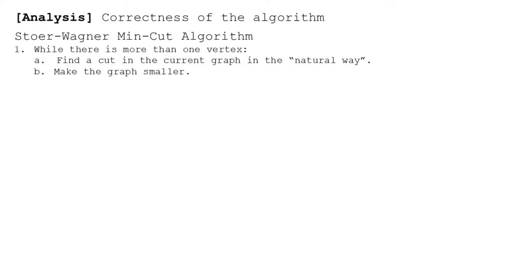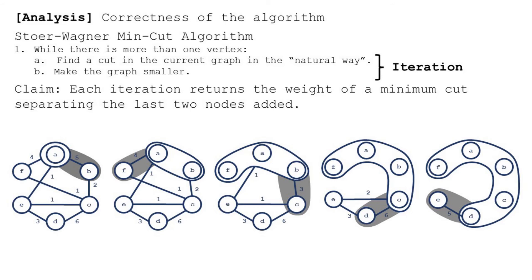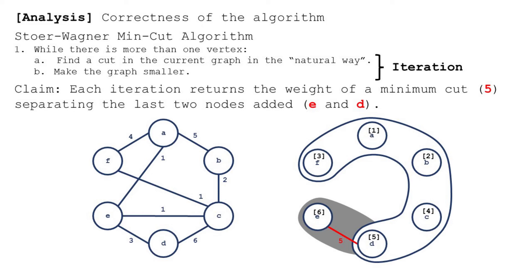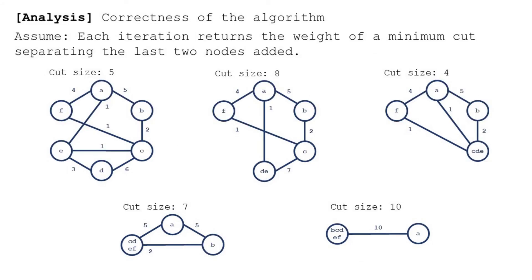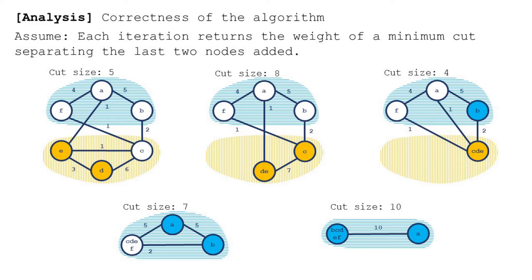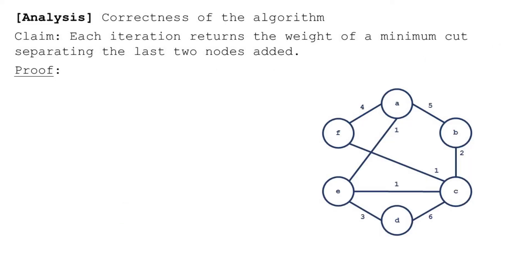After all this discussion of the algorithm, let's make sure it's correct. It follows from this claim: each iteration returns the weight of a minimum cut separating the last two nodes added. Recall that each iteration consists of finding the cut in the natural way and then merging the last two vertices added. For the first iteration, the claim is that any cut separating E and D must have weight at least five. If the claim is true, then the minimum cut size returned by any iteration occurs exactly when one vertex is on either side of the minimum cut. Since we merge vertices until only one remains, there will be an iteration where one vertex is on either side, and by the claim the weight returned will equal the minimum cut of the graph.